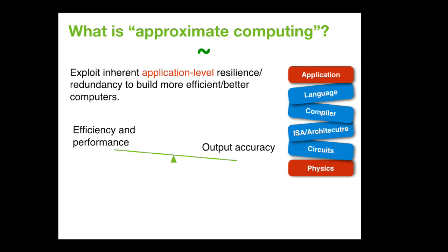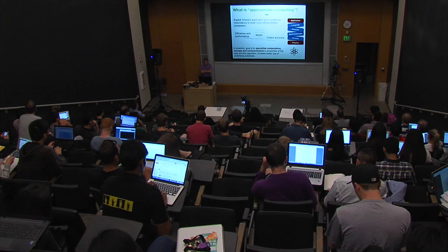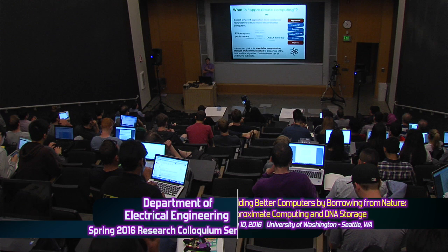Who read the book Thinking Fast and Slow by Daniel Kahneman? He's a Nobel laureate whose work is on decision making. He talks about two systems — system one is quick decision-making that's mostly accurate without much effort, and system two is invoked for detailed, careful decisions that are tiring. That's how brains work. More technically, the goal of approximate computing is to specialize computation, storage, and communication to the properties of algorithms in these applications — making relaxed data, relaxed computation, and relaxed communication.